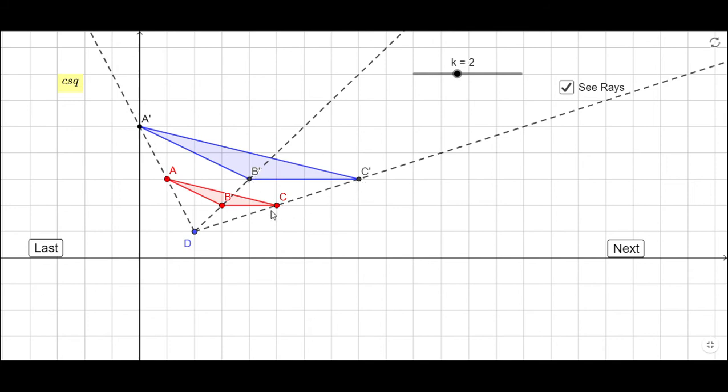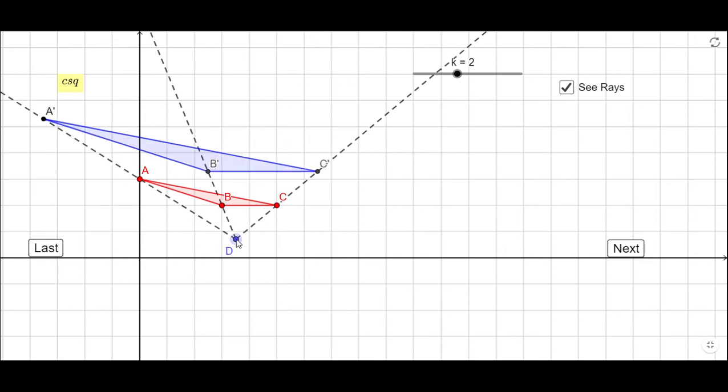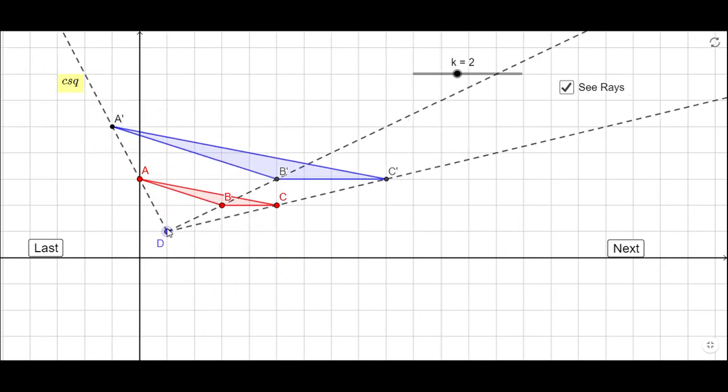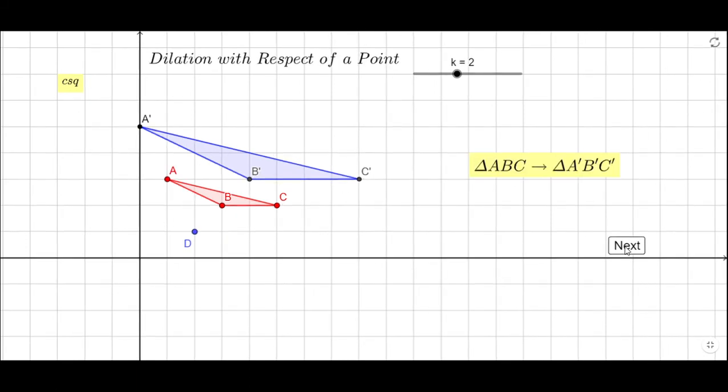C to C prime, all these are intersecting at point D. You can move the triangle and you'll notice we have the same situation. You can move the center of dilation and you get the same thing. Let me go back to the original.